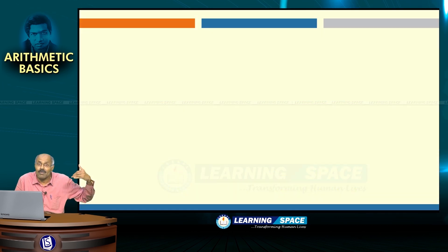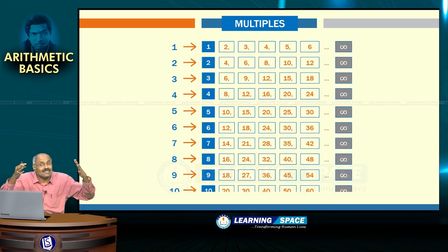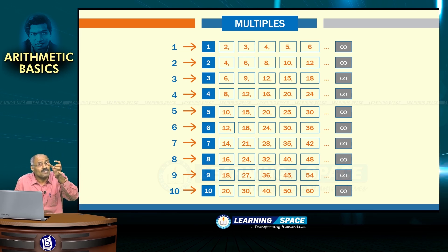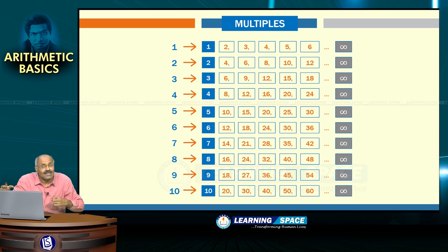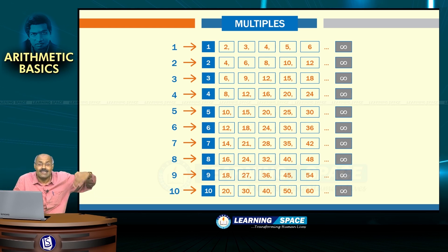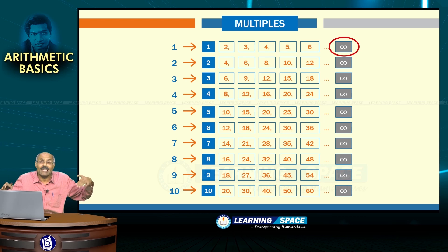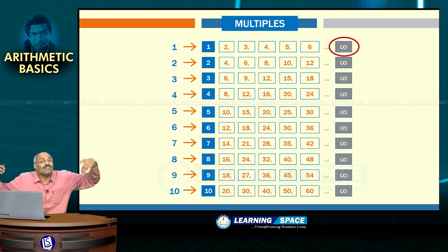Having learnt this, let us move on to multiples. I have listed out multiples from numbers 1 to 10 and highlighted the first numbers 1, 2, 3, 4, 5, 6, and also highlighted infinity. The least multiple for any number is that number itself. The highest multiple is infinity, and there are infinite multiples for any number.